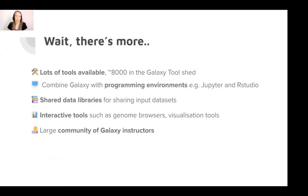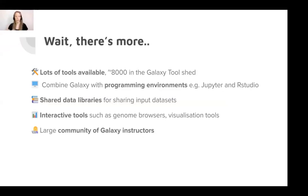Galaxy has around 8,000 tools in the Galaxy Tool Shed across many different scientific domains. You can also combine Galaxy with programming environments such as Jupyter and RStudio — so if you want to teach analysis using Python or R, you can do all of that without leaving Galaxy. There are shared data libraries where you can share input datasets for tutorials, so students don't have to individually download and re-upload them. There are also interactive tools like genome browsers that support more interactive exploration of the data. And there's a very large global community of Galaxy instructors you can discuss with and ask for help.